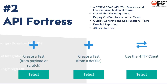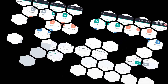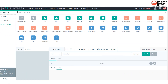API Fortress is our next API testing tool. API Fortress is a REST and SOAP API, web services, and microservices testing platform. It has out-of-the-box integrations, deploy on premises or in the cloud, quickly generate and edit functional tests, detailed reporting, and a 30-day free trial. This is the dashboard view of API Fortress.